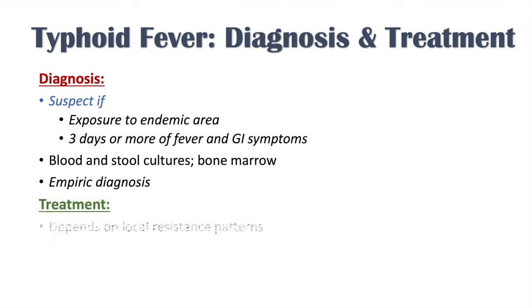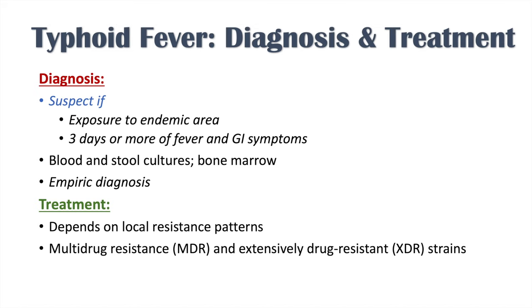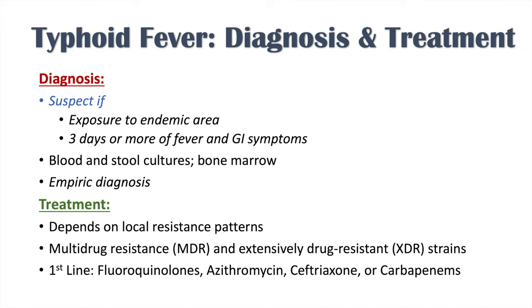Treatment of typhoid fever depends on local resistance patterns, as there can be multi-drug resistant (MDR) or extensively drug-resistant (XDR) strains that change which antibiotic is used. First-line antibiotics generally include fluoroquinolones, azithromycin, ceftriaxone, or carbapenems. For severe illness, you may add a steroid such as dexamethasone.